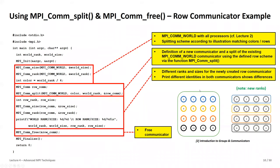Here's a code example: with 16 processes in MPI_COMM_WORLD, dividing by four gives four row-based communicators. You need the old communicator handle available on all 16 processes to perform the split, then you get four new row-based communicators. The new communicator shows different ranks and sizes compared to MPI_COMM_WORLD. At the end, you must free the communicator since it allocates MPI runtime resources.